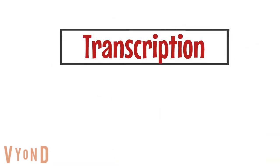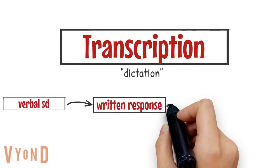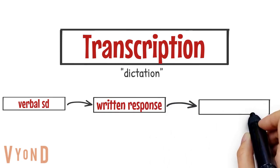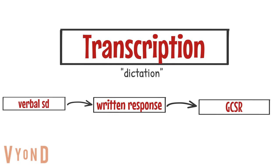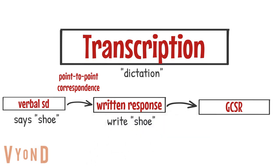The next verbal operant is transcription, which consists of writing and spelling words that are spoken. Skinner also refers to this as taking dictation. Transcription is a type of verbal behavior in which a spoken verbal stimulus controls a written, typed, or fingerspelled response, and then the speaker is provided with generalized conditioned reinforcement. There is point-to-point correspondence but no formal similarity. For example, someone says 'shoe,' I write 'shoe,' and then somebody tells me 'good job.'